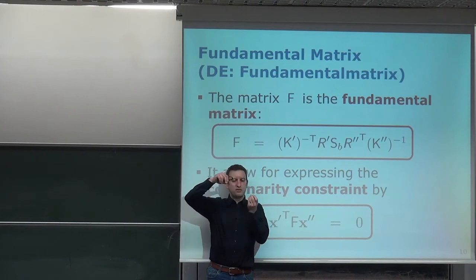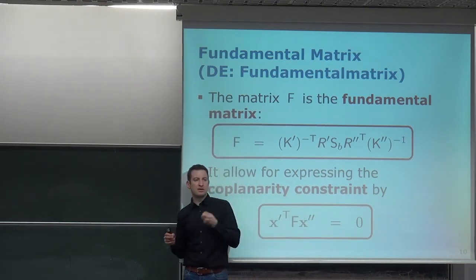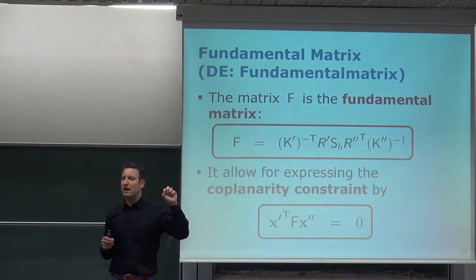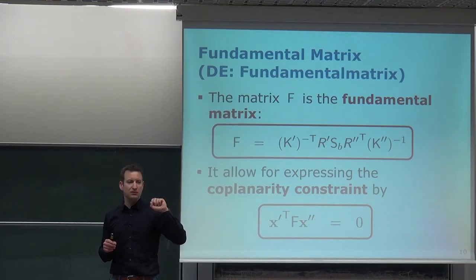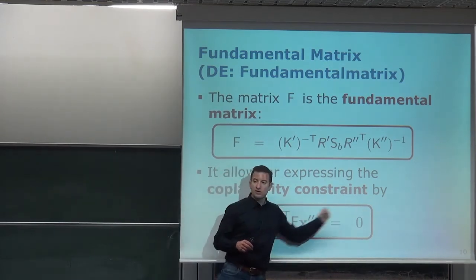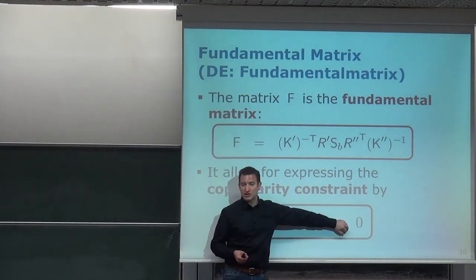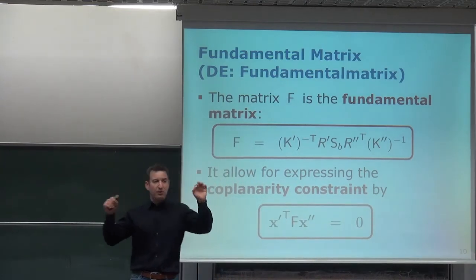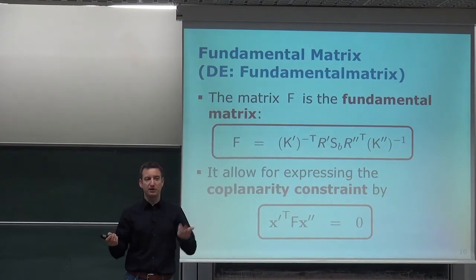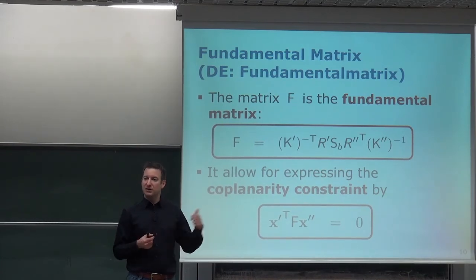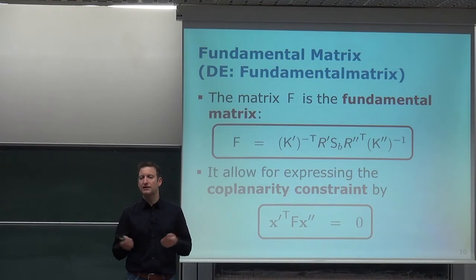If the expression is nonzero, the points do not lie in the same plane. A small deviation from zero is typically due to noise in localizing the points. A large deviation likely indicates a wrong data association. Note that zero is not a guarantee of correct association — coincidental coplanarity can occur. But a large nonzero value is a strong indicator of wrong correspondences.